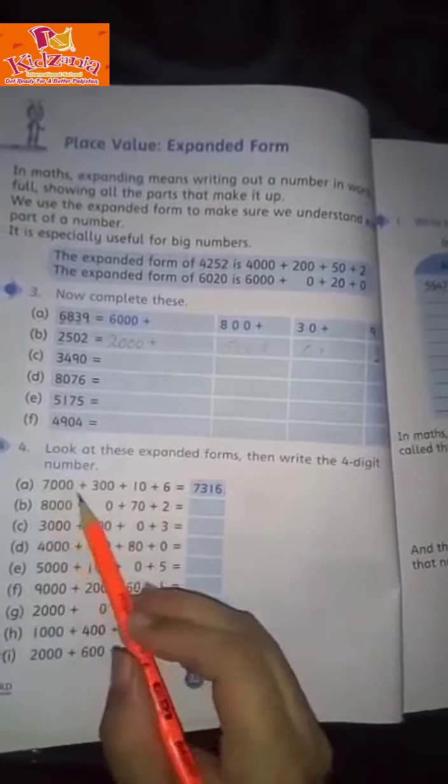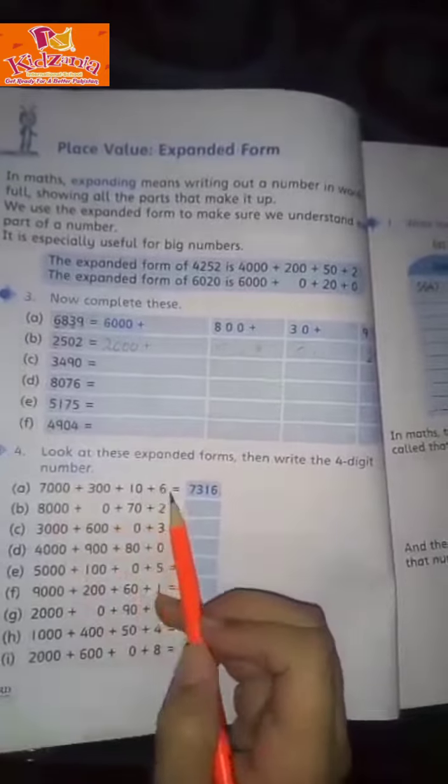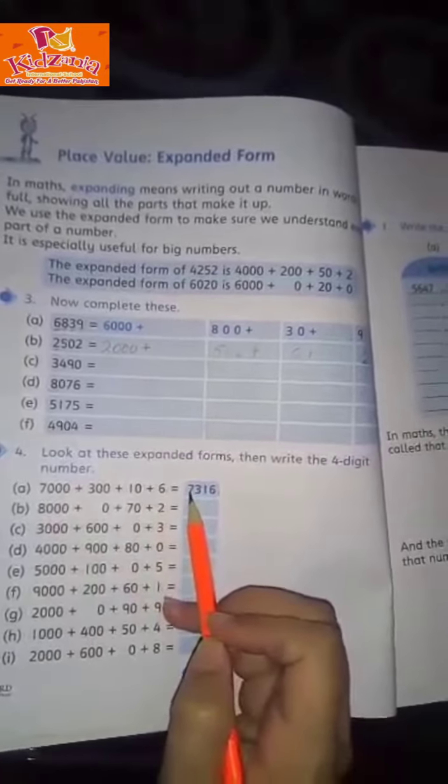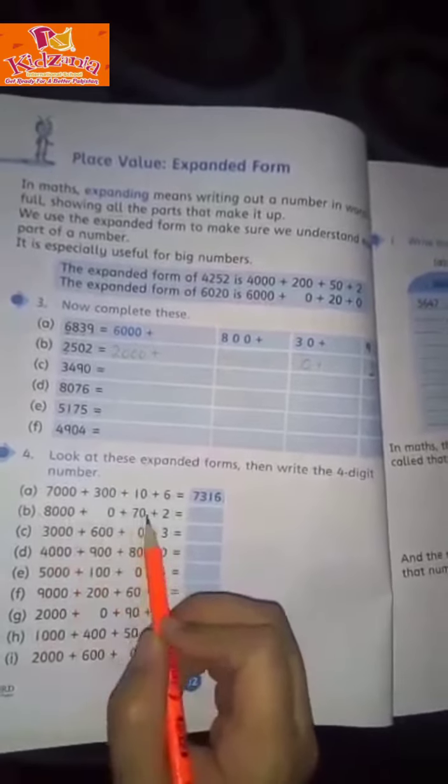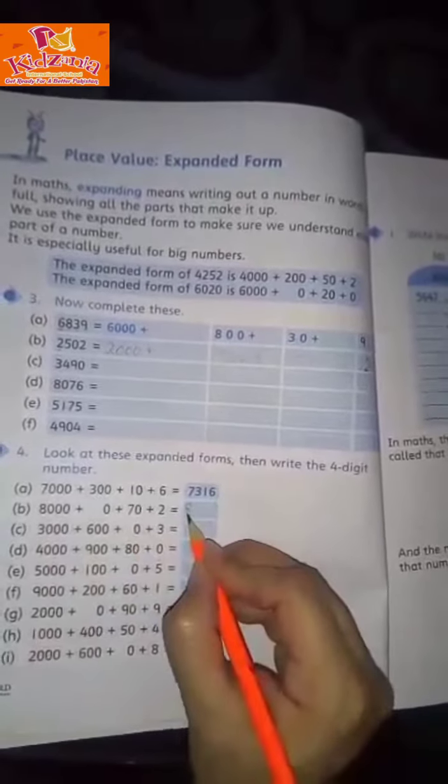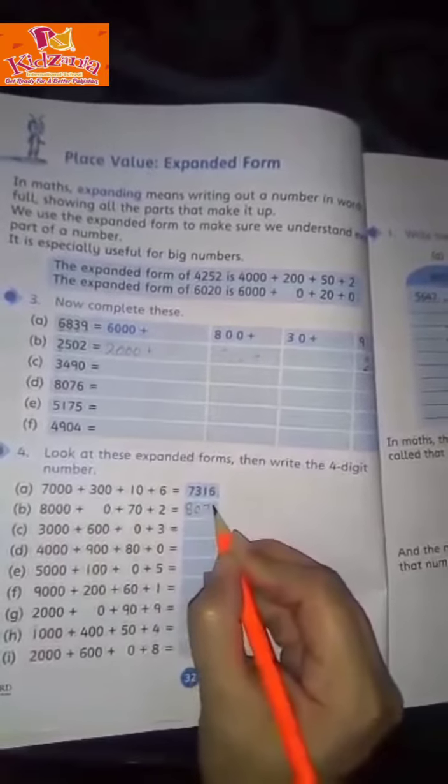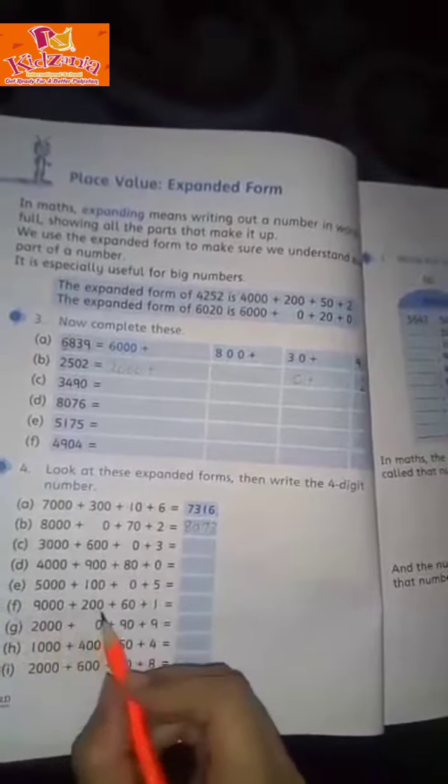Part a: 7,000 + 300 + 10 + 6, so we have 7,316. Part b: 8,000 + 0 + 70 + 2, so we write 8,072. Part f: 9,000 + 200 + 60 + 1 = 9,261.